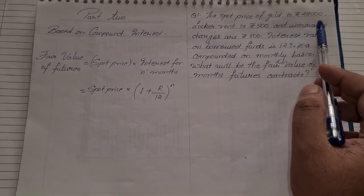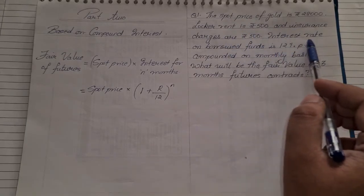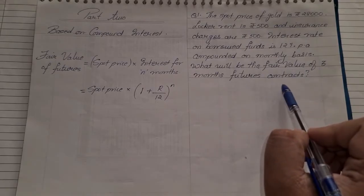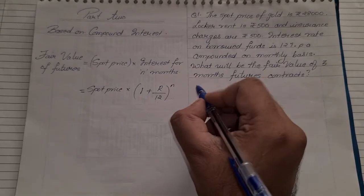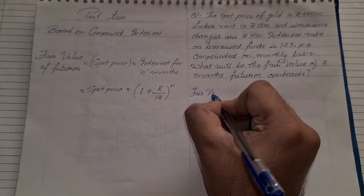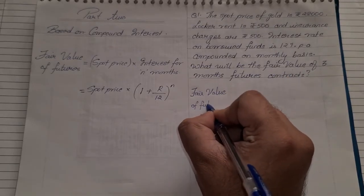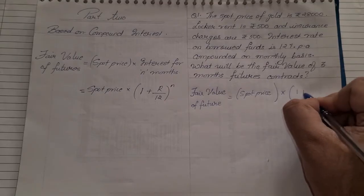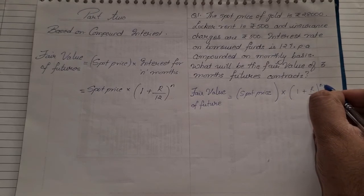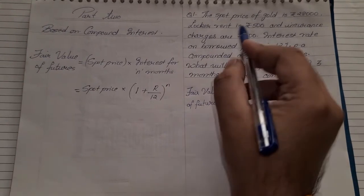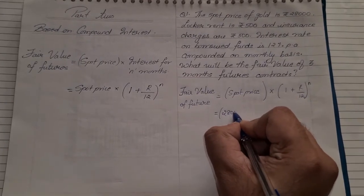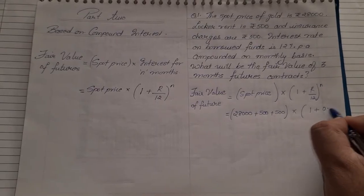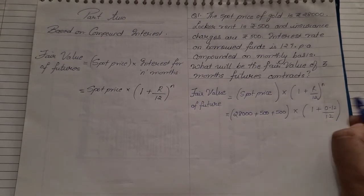The spot price of gold is ₹28,000. Locker rent is ₹500 and insurance is ₹500. The interest rate on borrowed funds is 12% per annum, compounded on a monthly basis. What will be the fair value of a three-month future contract? Fair value of future = spot price × (1 + r/12)^n. Spot price: 28,000 + 500 + 500 = 29,000. Into (1 + 0.12/12)^3.